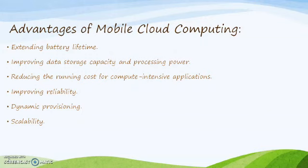Improving Reliability: Storing data or running applications on clouds is an effective way to improve reliability, because the data and applications are stored and backed up on a number of computers. This reduces the chance of data and application loss on the mobile devices. In addition, Mobile Cloud Computing can be designed as a comprehensive data security model for both service providers and users.